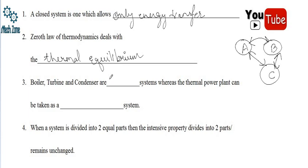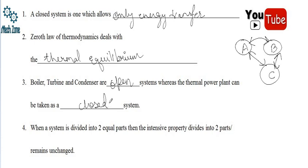The next question: boiler, turbine, and condenser are blank systems, whereas the thermal power plant can be taken as a blank system. In case of boiler, turbine, and condenser, both mass and energy transfer can take place, so they are open systems. The thermal power plant as a whole can be considered a closed system.